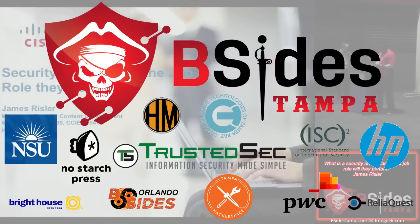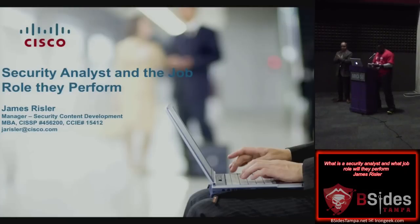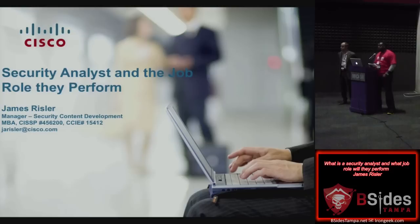Good afternoon, everyone. Thanks for coming out. In this track, we have James Rissler, CISSP and CCIE number 15412. He's a systems engineer and manager of security content development at Cisco Systems. His focus is on security, technology, and training development. He will be discussing the role of the security analyst and how they can help identify an attack. There will be questions afterwards, so hold those until the end.